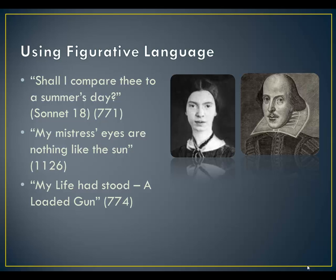My Life Had Stood a Loaded Gun — this was written by Emily Dickinson around 1863. My Life Had Stood a Loaded Gun / In Corners Till a Day / The Owner Past Identified / And Carried Me Away / And Now We Roam the Sovereign Woods / And Now We Hunt the Doe / And Every Time I Speak for Him / The Mountains Straight Reply / And Do I Smile Such Cordial Light / Upon the Valley Glow / It Is as a Vesuvian Face / Had Led Its Pleasure Through / And When at Night Our Good Day Done / I Guard My Master's Head.